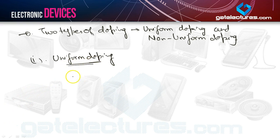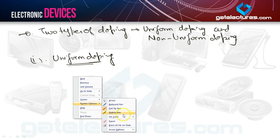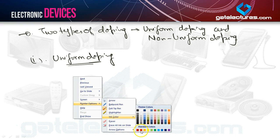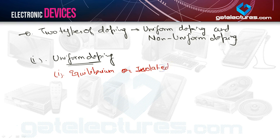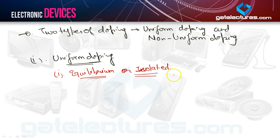Now let's discuss what is meant by uniform doping. We are considering two different subsections. First one is when the semiconductor is in equilibrium, or the system is isolated. Whenever you encounter an equation which includes either of these two terms, you have to consider the scenario I am going to explain. So let's say the semiconductor is in equilibrium or isolated — isolated means it is not connected with any external voltage source or any other type of source. It is totally isolated.